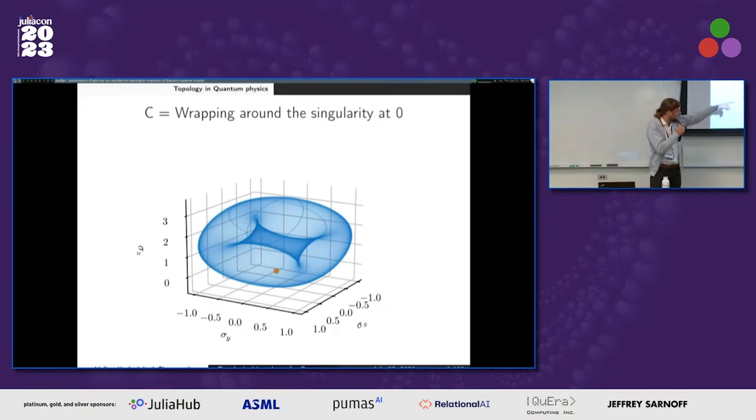So if we are outside, if we move this ball somewhere else and this little charge is not inside anymore, then the Chern number will be zero.